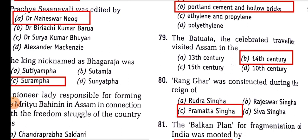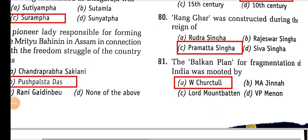The celebrated traveller who visited Assam in the 14th century — Ranghar was constructed during the reign of Pramatta Singha. The Balkan plan of fragmentation of India was mooted by Winston Churchill.